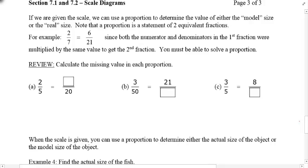Now, there are two things I want to teach you today. The first one was determining the scale factor, and the second one is now finding the length of missing sides. And if we are given a scale, we can use a proportion to determine the value of either the model size or the real size. And I hope you remember doing this from grade 8. A proportion is really a statement of two equivalent fractions. So I've given you a statement of two equivalent fractions. 2 sevenths is equal to 6 over 21. Since both the numerator and denominators in the first fraction were multiplied by the same value to get the second fraction, and that value would have been 3.